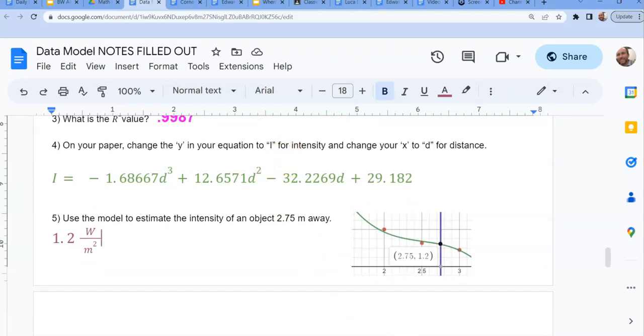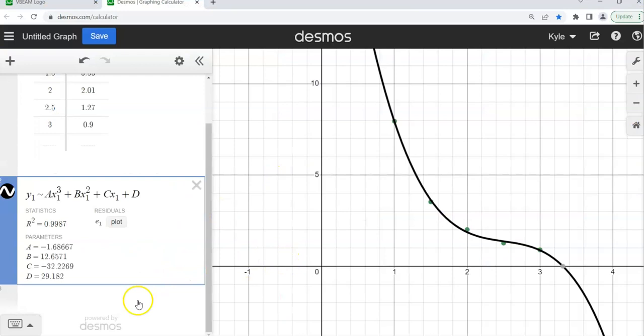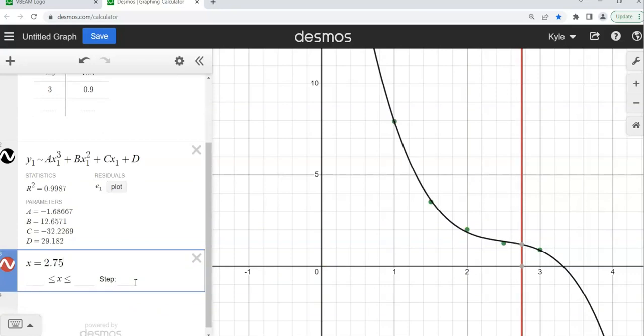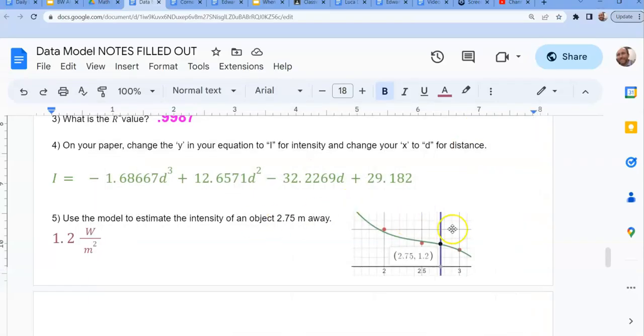I'm going to go back to Desmos real quick. And all I'm asking it is, hey, when the x value was 2.75, it gave me a line. Look, here's where the x value is 2.75. If I can look and see where that crosses our curve at 1.2, well then that's what the y value is. That is the intensity at 2.75 away. 1.2, there it is again.